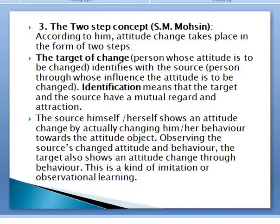According to Mohsin, attitude change takes place in the form of two steps. In the first step, the target of change identifies with the source. The target is the person whose attitude is to be changed. The source is the person through whose influence the change is to take place. Here, identification means the target has liking and regard for the source.